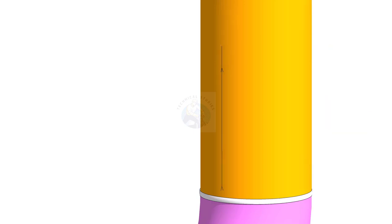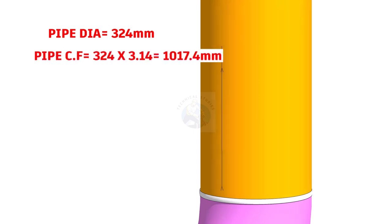As I said earlier, the OD of the pipe is 324mm. Pipe circumference equals 324 multiplied by pi or 3.142 equals 1017.4mm.